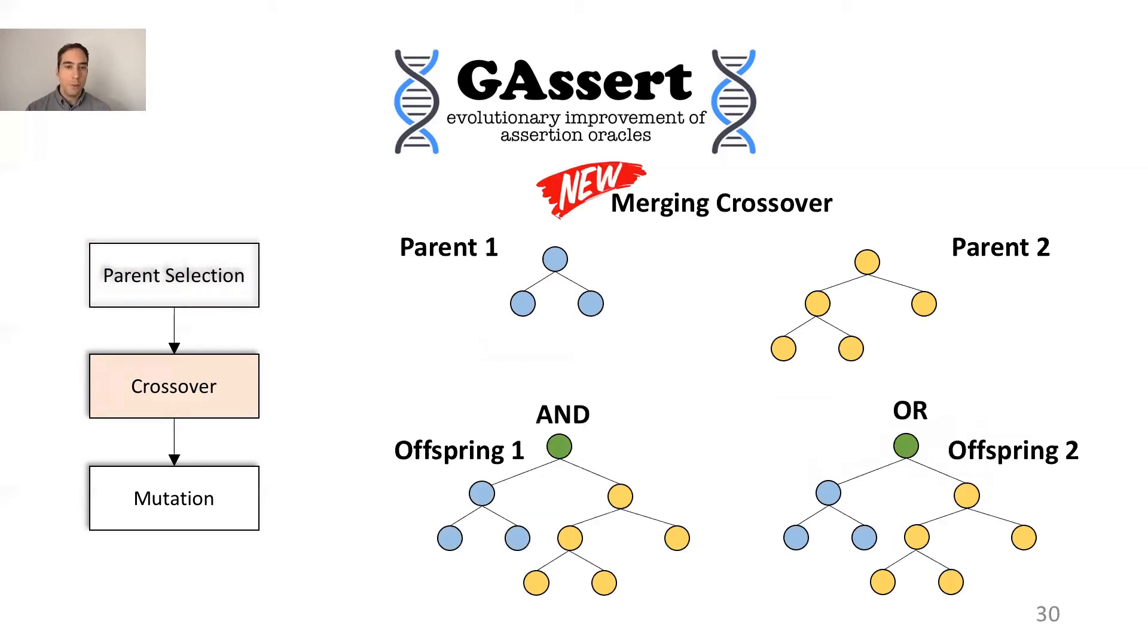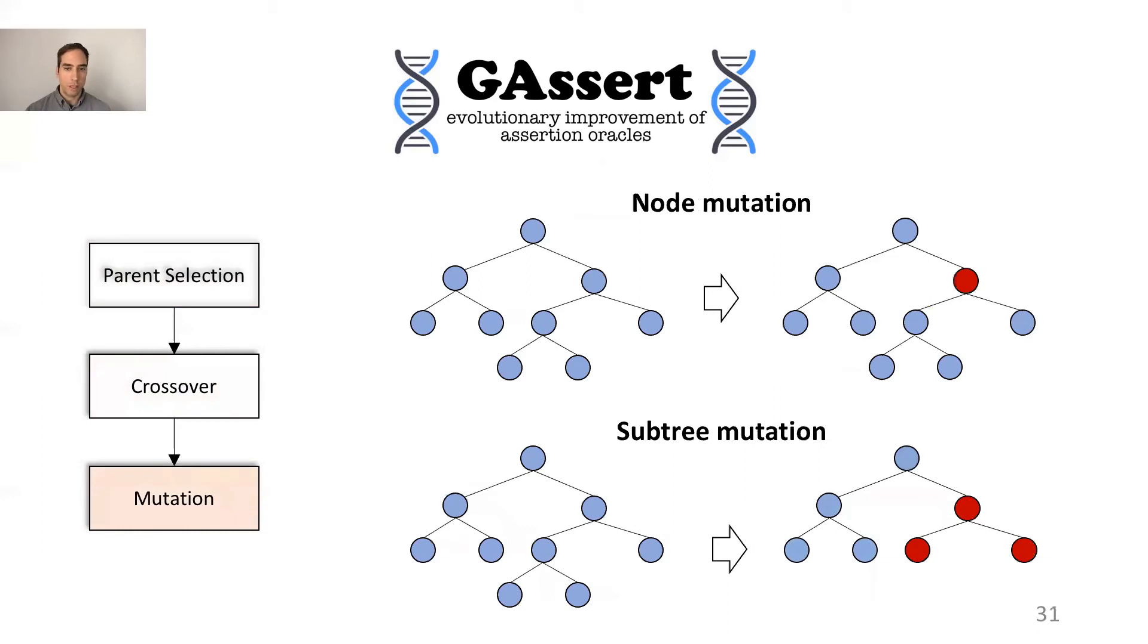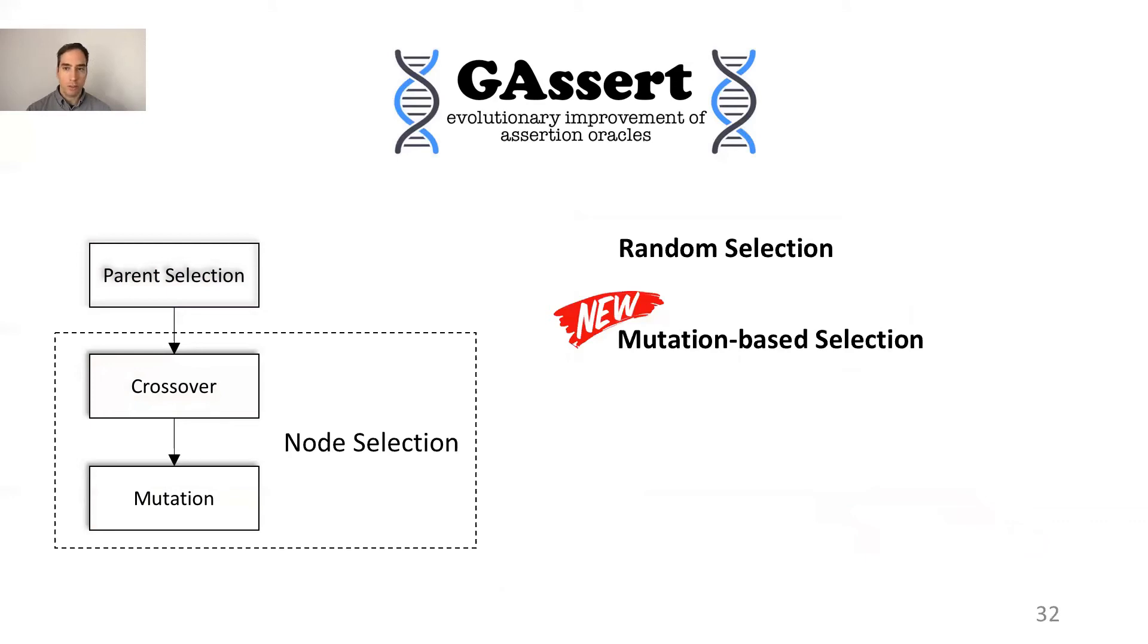We also present a new crossover that merges the two parents with an AND or an OR. This crossover works well in synergy with the best match selection because it combines the parents without disrupting their semantics. For the mutation we use the classic node and subtree mutation. To select the nodes for the crossover mutation we use random selection and mutation-based selection that favors nodes having children that predicate on variables that we know differ among the correct and incorrect states.